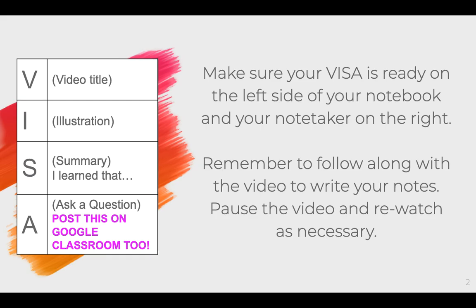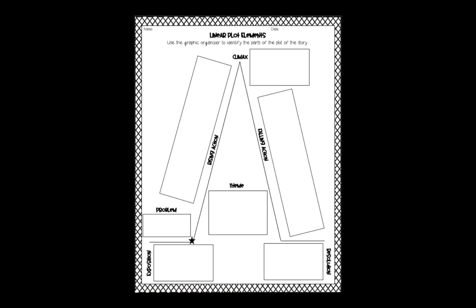To have your notes ready, make sure that you have your VISA on the left side of your notebook and that the note taker is glued onto the right side. Remember that VISA stands for video title, illustration, summary — and we use the sentence stem 'I learned that' to get started. A is for ask a question. That ask-a-question part is what you're going to post on Google Classroom so that I know that you actually saw the video and understood it. This is the note taker you should have on your right side. Right now it is blank, and as you see the notes coming up on the screen you're going to be filling in your note taker to have it ready in class when we go over plot.